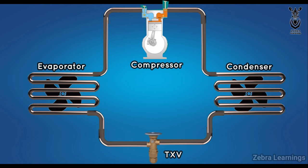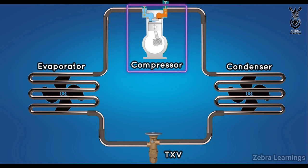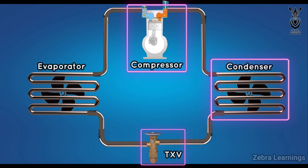Four important components are used in this cycle. They are compressor, condenser, expansion valve, and evaporator.